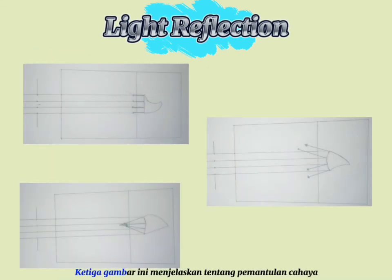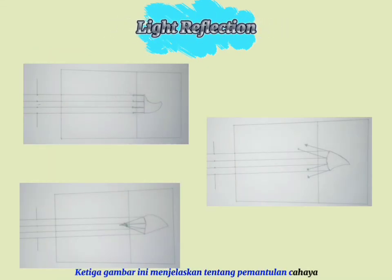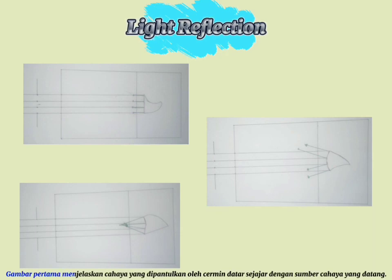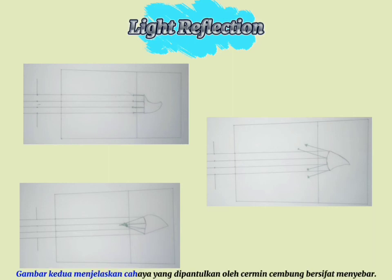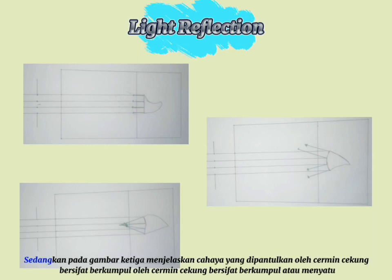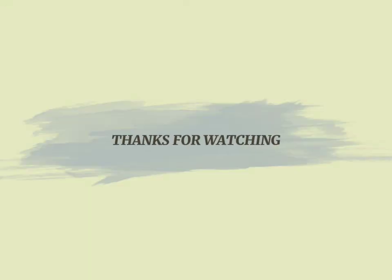These three images explain the light reflection. The first image describes the light reflected by a flat mirror parallel to the incident light source. The second image shows that the light reflected by the convex mirror is diffused. The third image explains that the light reflected by the concave mirror is converged.